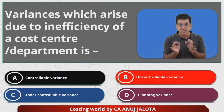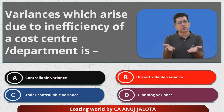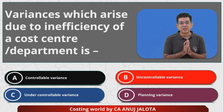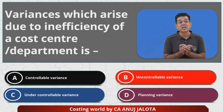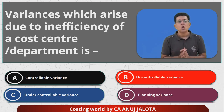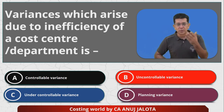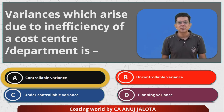Going back to our question: variances which arise due to inefficiency — or efficiency — of the cost center are obviously controllable variances, also called operational variances. The word 'operational' is not among the options, so the answer is A — controllable variances. That's the correct answer.